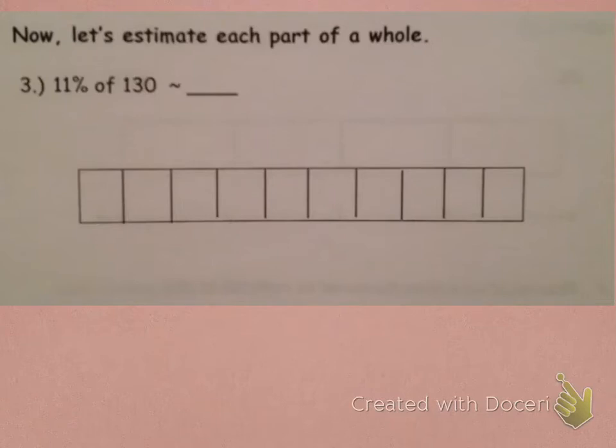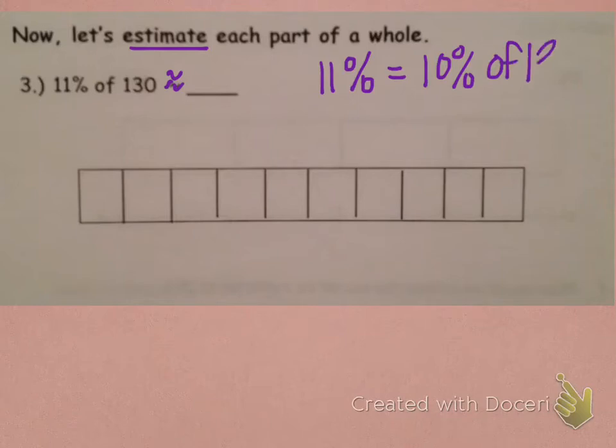Remember, these little squiggly lines are about. About is equal to about, and that's what we're going to try to figure out. So, because it says estimate, that means let's change this 11% to 10%. So, now we're figuring out 10% of 130, much nicer than 11%.